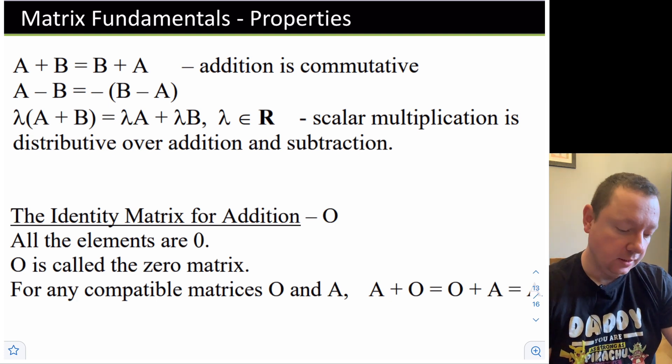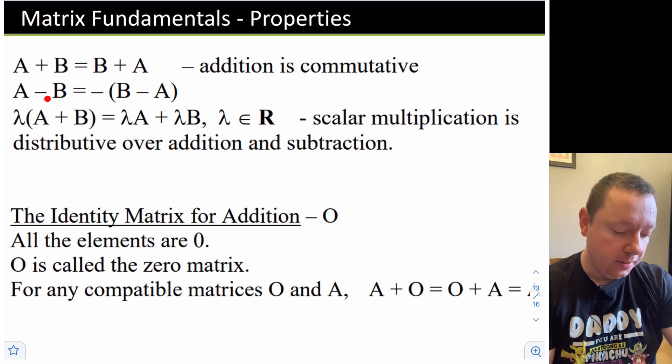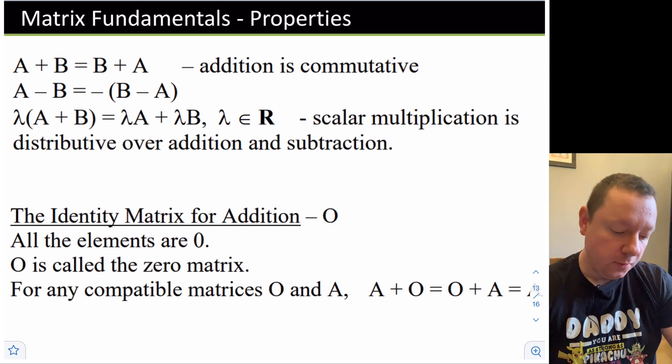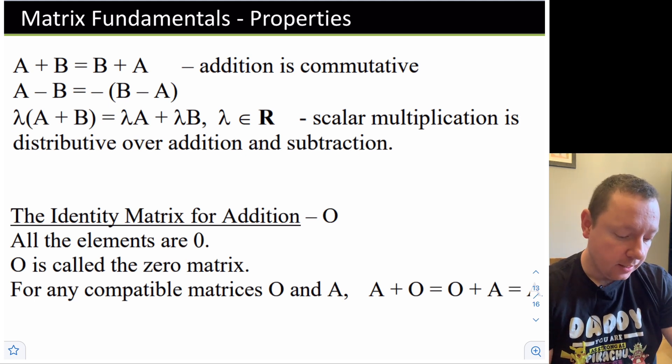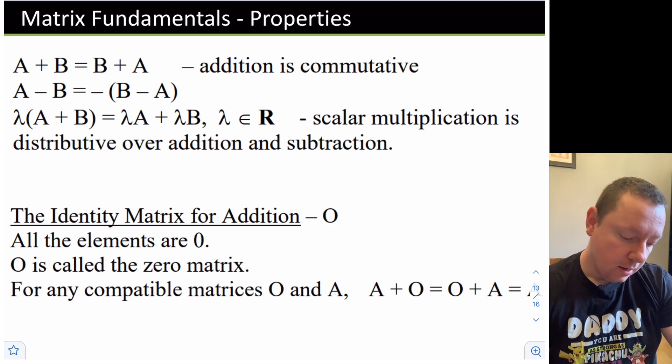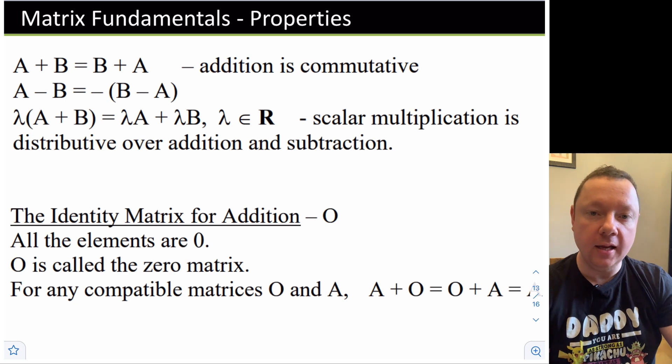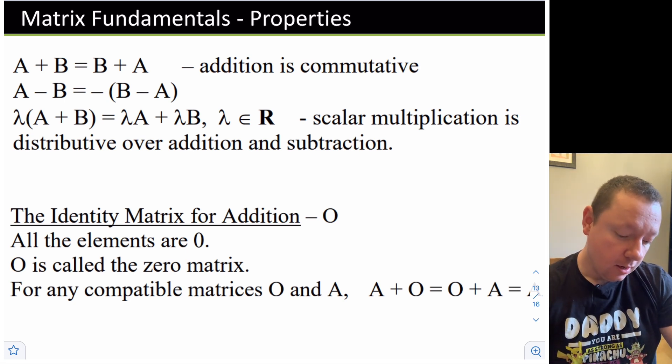A few matrix properties. If we add matrices, addition is commutative. In other words, A + B always equals B + A. Or, on the subtraction side, A - B would equal -(B - A). Scalar multiplication is distributive over addition and subtraction. So in other words, if I took some number λ, λ(A + B) = λA + λB. The normal thing that happens when we multiply out brackets. The identity matrix for addition is zero. So the word identity in maths means anything you take where, if you put it in, you get the same thing coming out. In other words, A + 0 = 0 + A = A.